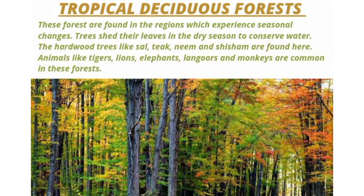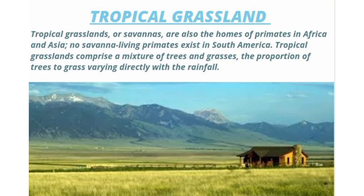Tropical grassland. Tropical grasslands or savannas are also called the homes of pyramids in Africa and Asia. No savanna living pyramid exists in South America. Tropical grasslands comprise a mixture of trees and grasses. The proportion of trees to grasses varies directly with their rainfall.